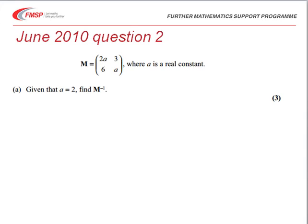So taking those one at a time then, in part A, given that a equals 2, find M inverse. Well if a is equal to 2, M is equal to the matrix 4, 3, 6, 2.